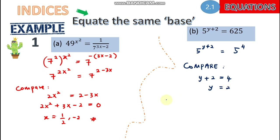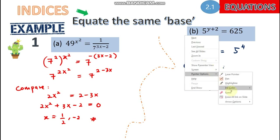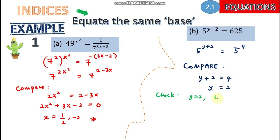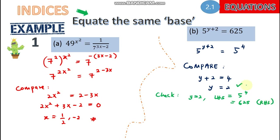At the end we should have y = 2. To validate, when y = 2 the left-hand side equals 5 to the power of 4, which is 6 to the 5th, the same as the right-hand side. Therefore y = 2 is our answer. You can show working, but you can also just insert it into your calculator.